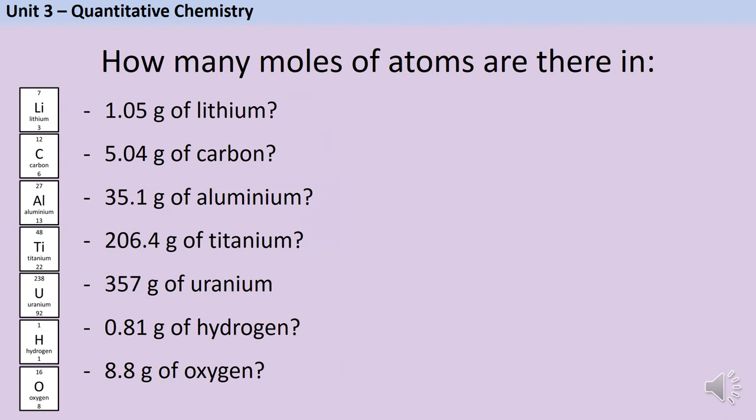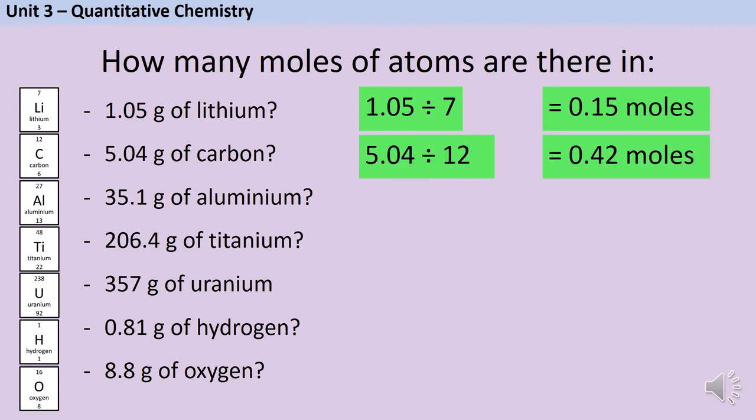To work out the number of moles of atoms in a sample of lithium I'm using relative atomic mass rather than relative formula mass, but functionally they're the same as each other. So I'm going to do mass divided by relative atomic mass: 1.05 divided by 7, and that gives me an answer of 0.15 moles. If I do the same for the next question, I'm doing the mass of 5.04 divided by the relative atomic mass of carbon which is 12, and I get an answer of 0.42 moles. If that makes sense, pause the video now and see if you can work through the rest of the questions on your own.